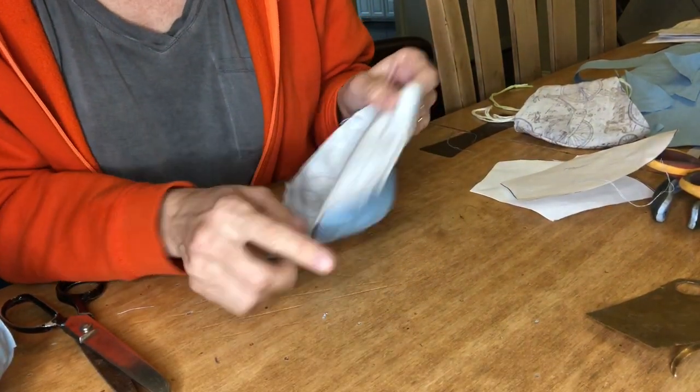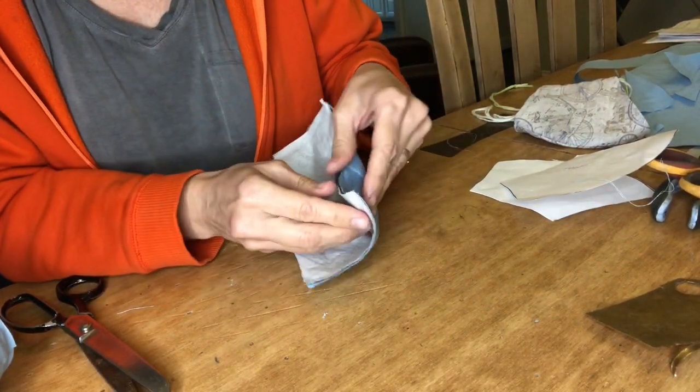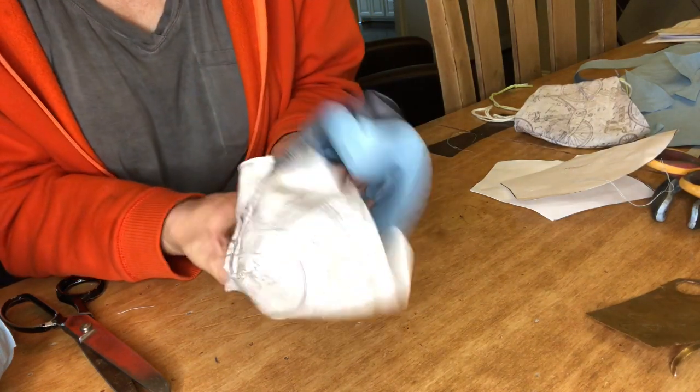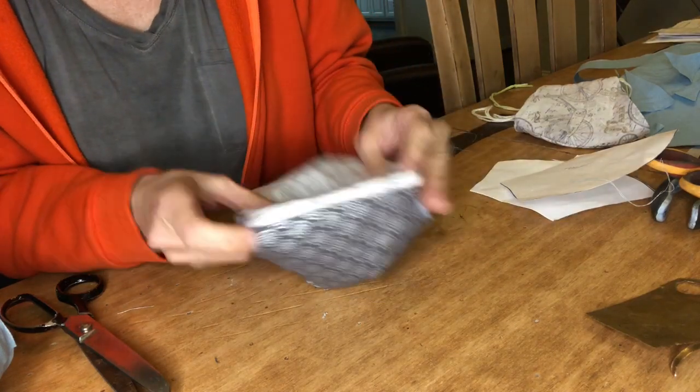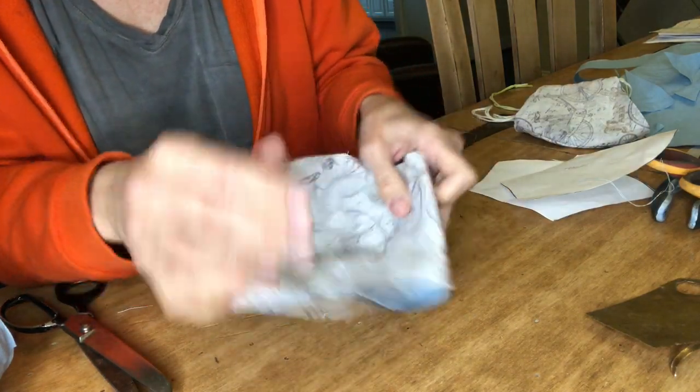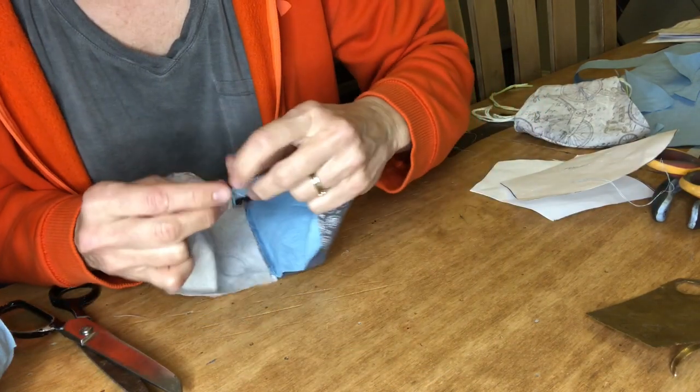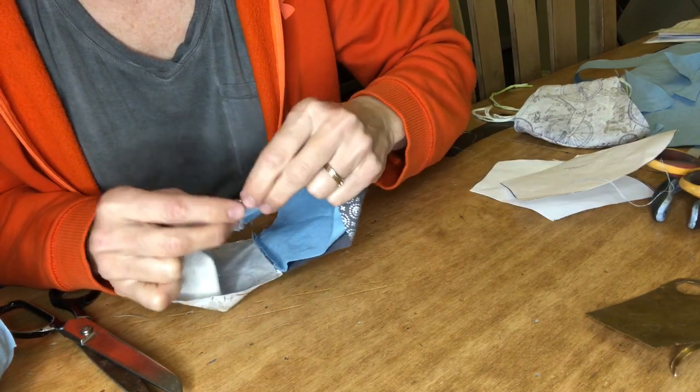So I have the outsides sewn together and now I'm going to flip it inside out. Tuck the inside pattern in, hem the edge. So flip over the edge about a quarter of an inch all the way around.